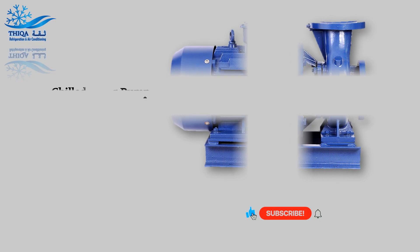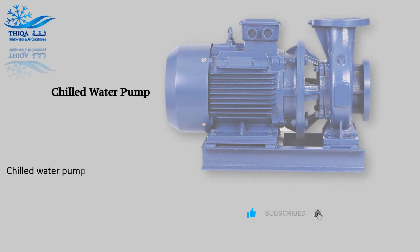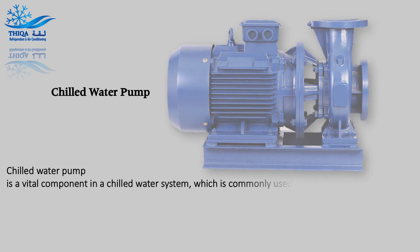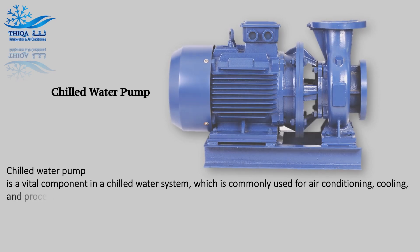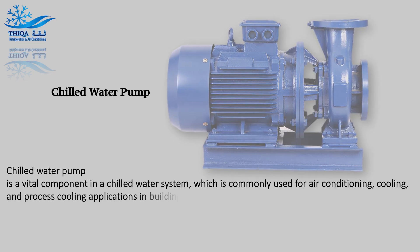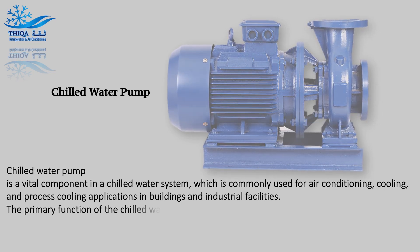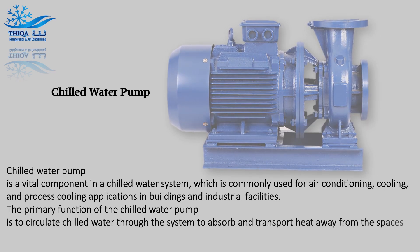A chilled water pump is a vital component in a chilled water system, commonly used for air conditioning, cooling, and process cooling applications in buildings and industrial facilities. The primary function of the chilled water pump is to circulate chilled water through the system to absorb and transport heat away from the spaces or processes that need cooling.